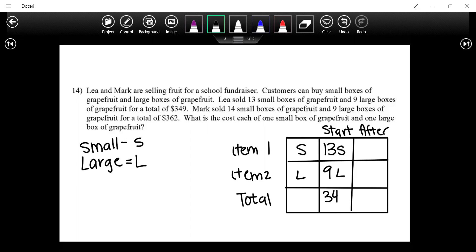Now these numbers I think are going to be pretty big when we solve this. Mark on the other hand—so if you want to really change the context of this problem, you can do the start or after, same kind of thing applies. This would be Leah, this would be Mark if we wanted to. Mark sold how many? 14S and 9 large, averaging a total of 362.